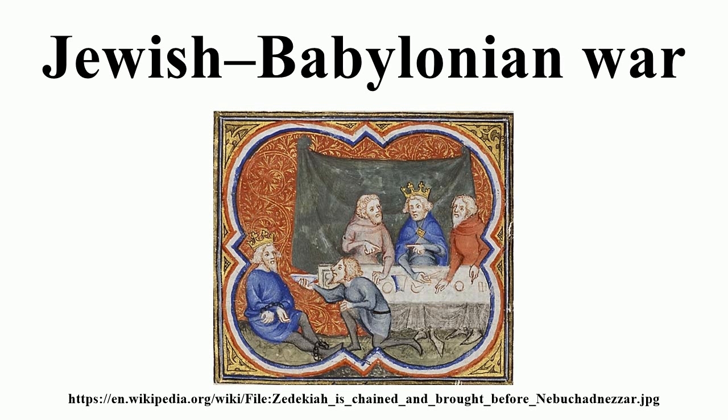Background: Egypt was the regional power until the Battle of Carchemish in 606 BC. Later, Babylonia came and ended Egyptian rule, established its own rule, and made Judah its vassal.